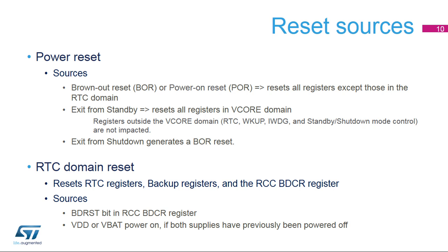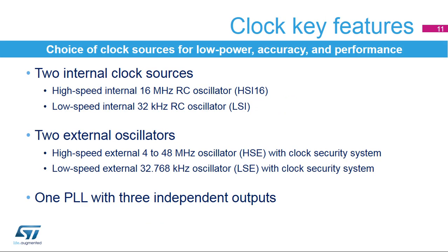The third type of reset is the RTC domain reset, which resets the RTC registers, the backup registers, and the RTC domain control register. This reset occurs when the BDRST bit is set in the RTC domain control register. It also occurs when VDD and VBAT are powered on if both supplies have previously been powered off. The RTC offers a large choice of clock sources, which can be selected depending on low-power, accuracy, and performance requirements.